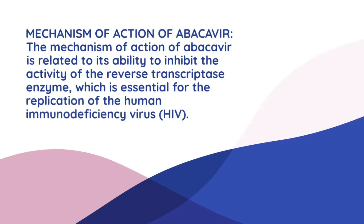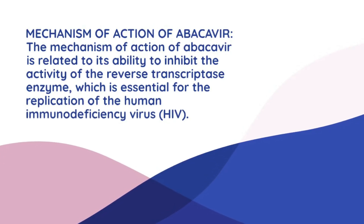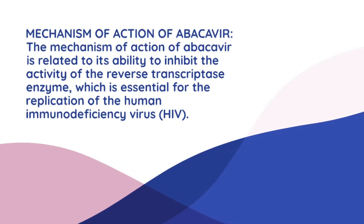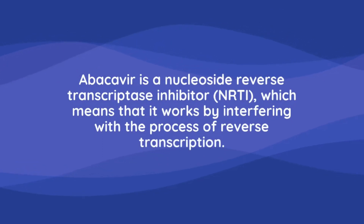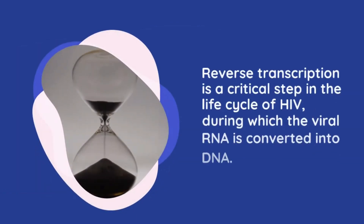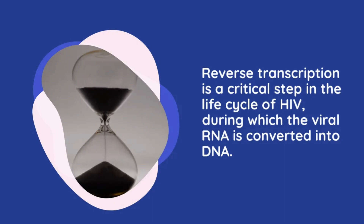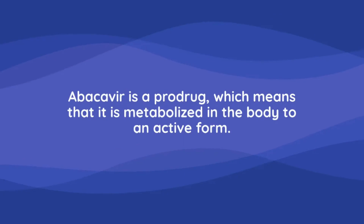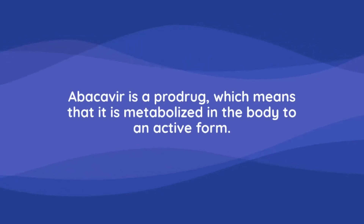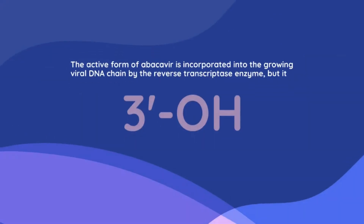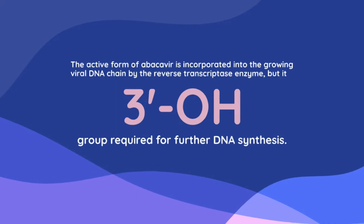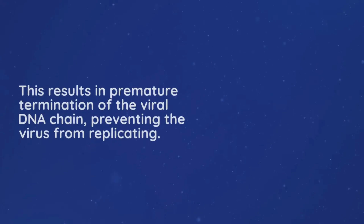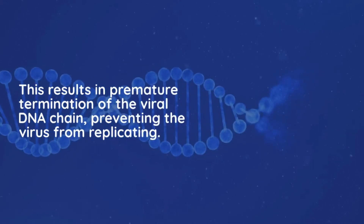The mechanism of action of abacavir is related to its ability to inhibit the reverse transcriptase enzyme, which is essential for HIV replication. As a nucleoside reverse transcriptase inhibitor (NRTI), it interferes with reverse transcription — the process by which viral RNA is converted into DNA. Abacavir is a prodrug, metabolized to an active form that is incorporated into the growing viral DNA chain by reverse transcriptase, but it lacks the 3' OH group required for further DNA synthesis, resulting in premature termination of the viral DNA chain.